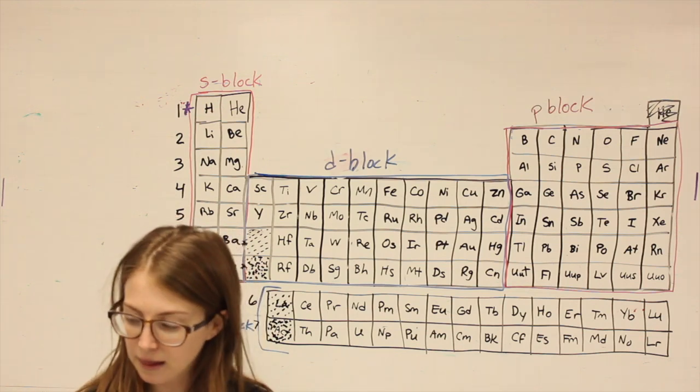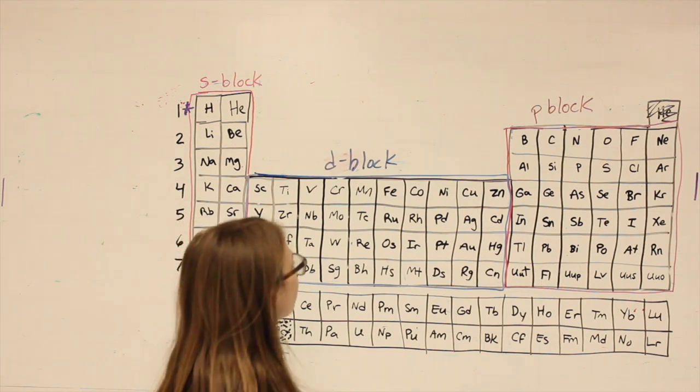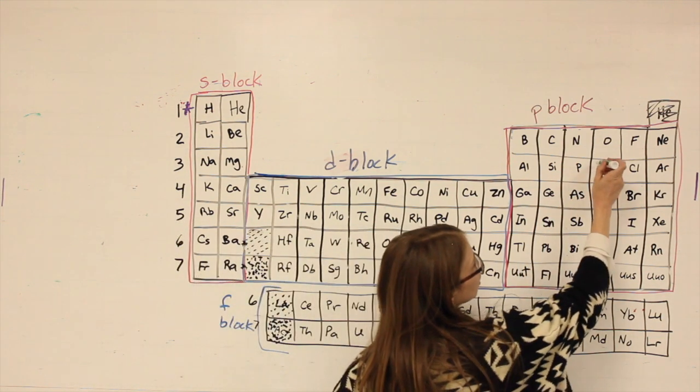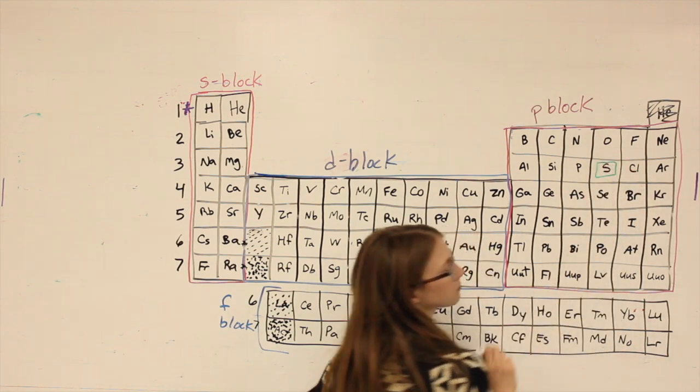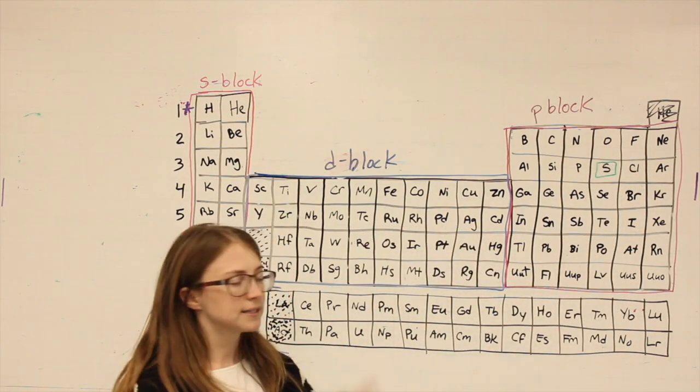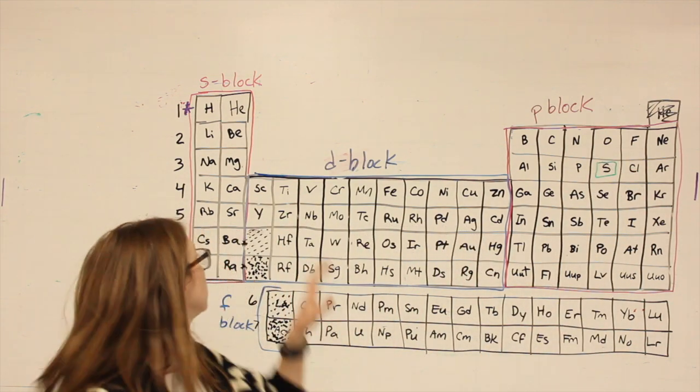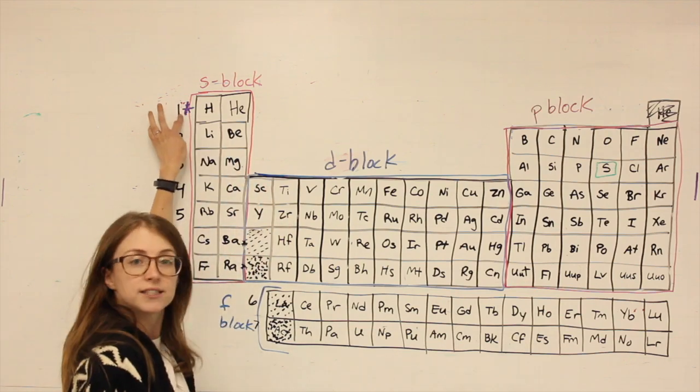So for instance, if I want to write the electron configuration for sulfur, that means it's like I picked up the card that says sulfur, start at the start and walk until you hit sulfur.